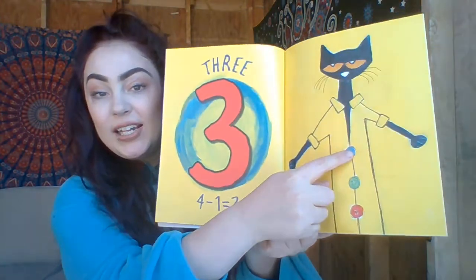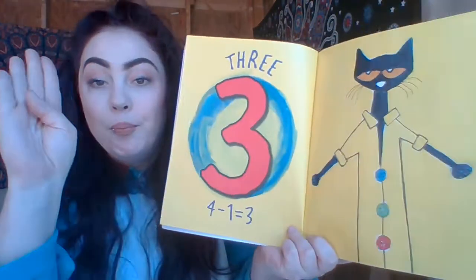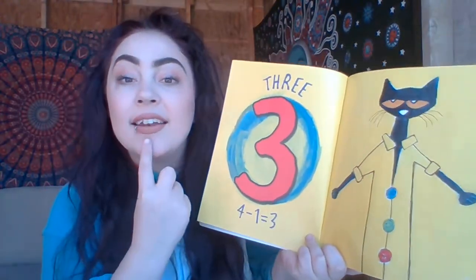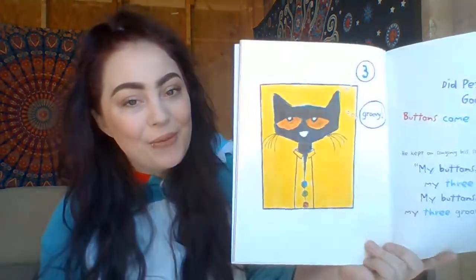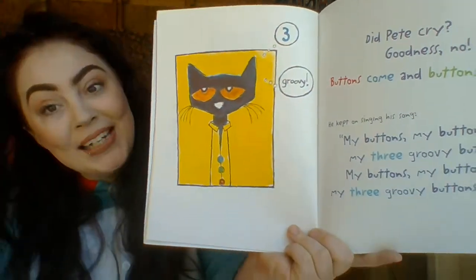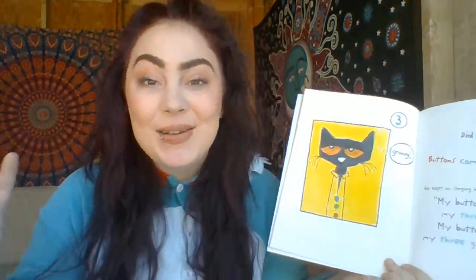He's got one, two, three buttons left. He's got a blue button, a green button, and a red button. Did Pete cry? Goodness, no. Buttons come and buttons go. He kept on singing his song: My buttons, my buttons, my three groovy buttons.